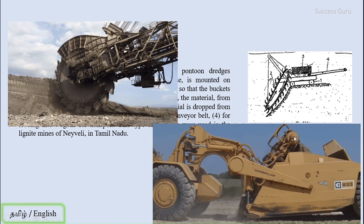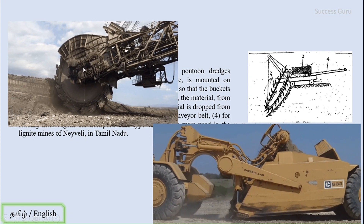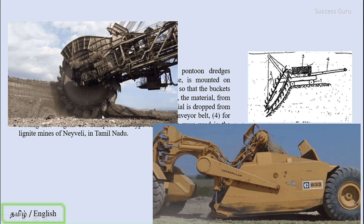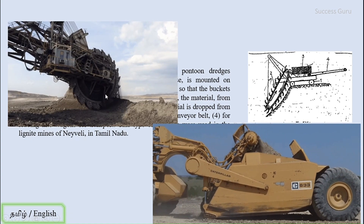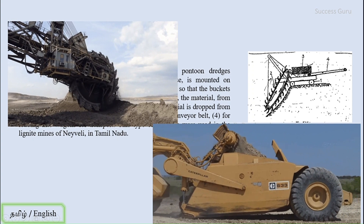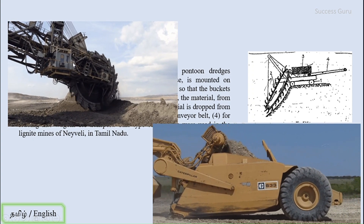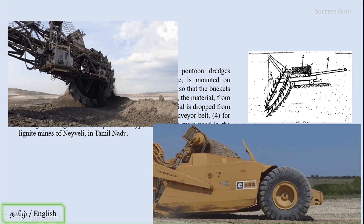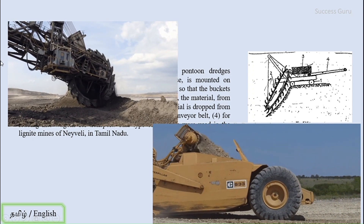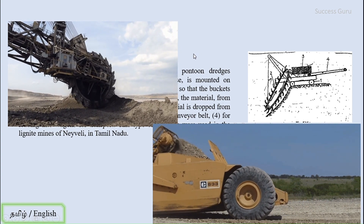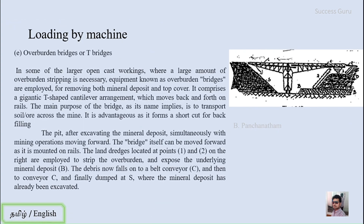You can see two different land dredges here — a large one and a small one. By rotation, the dredge lifts material from the mine face and drops it onto a conveyor belt, which transports it to the desired position. That is how the land dredge works.